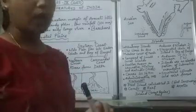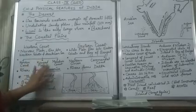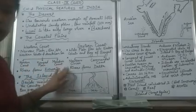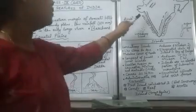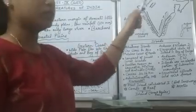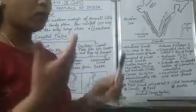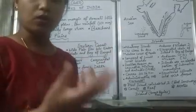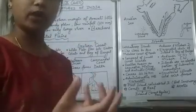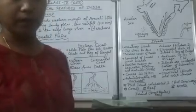We have divided the western coast into three strips. The northernmost strip is called the Konkan coast, which covers the Mumbai and Goa region. The Konkan coast got its name from the Konkani language, which is spoken in the Goa state.